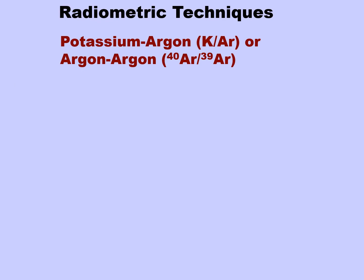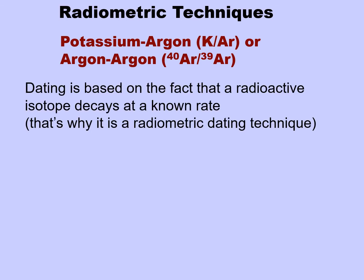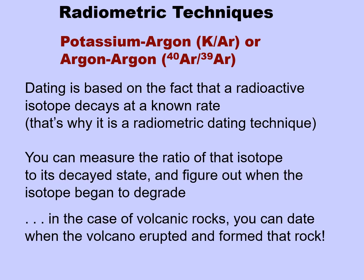Let's begin with the radiometric techniques, starting with potassium-argon or argon-argon. This dating is based on the fact that a radioactive isotope decays at a known rate — hence why we call it a radiometric dating technique. You can measure the ratio of that isotope to its decayed state and figure out when the isotope began to degrade. In the case of volcanic rocks, you can date when the volcano erupted, forming that rock.